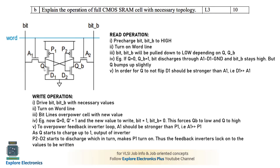If Q equals 1, we have stored the value 1. We again pre-charge bit and bit-bar to 1, and word line is made 1, turning on A1 and A2. Since Q equals 1 and Q-bar equals 0, there is a discharge path for bit-bar through A2, D2, and ground. There is no discharge path for the bit line since D1 is off — P1 is on but D1 is off. So bit remains high, indicating we are reading the value 1.